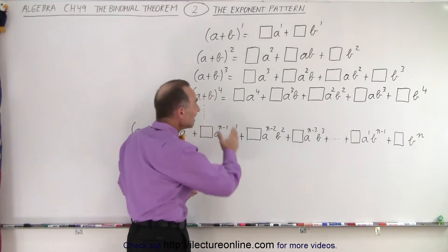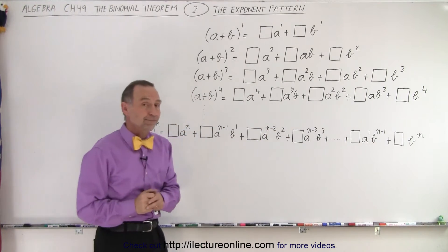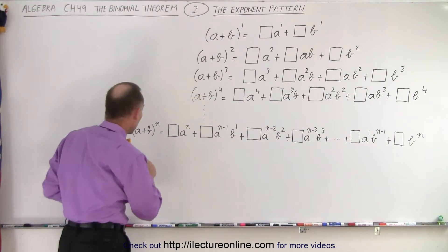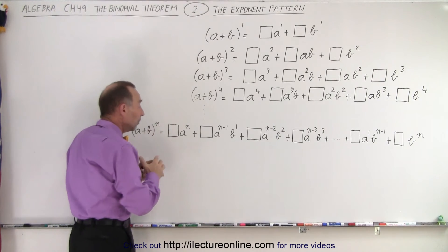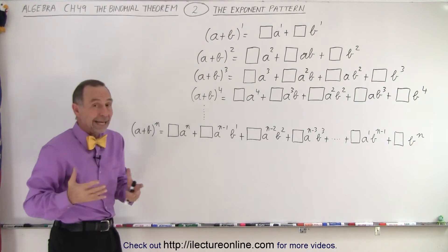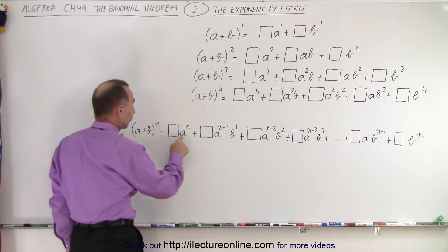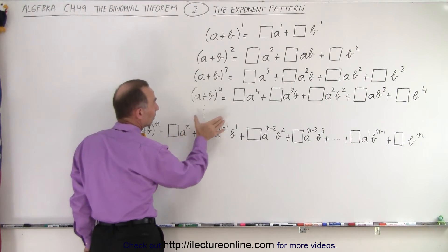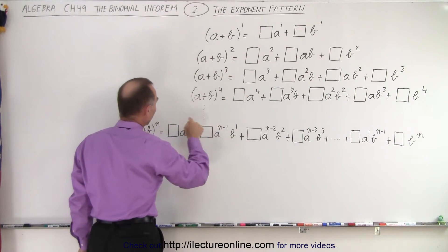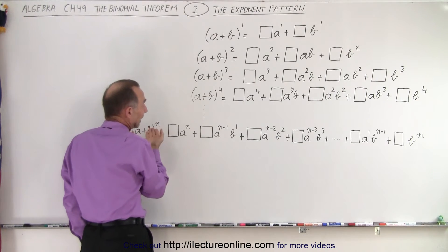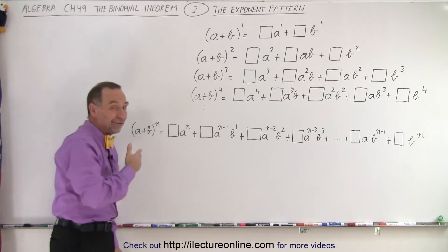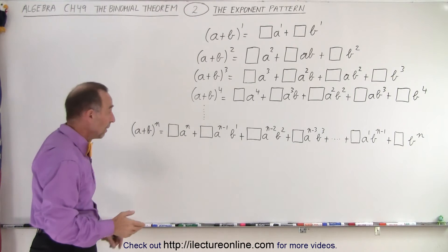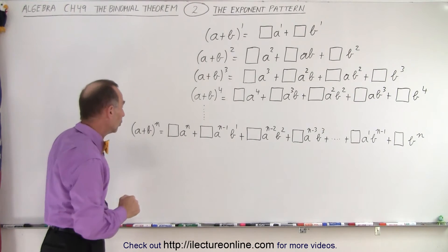That's the case in every binomial expansion. When we write (a + b) to the n power, no matter what n equals, the first term starts with a to the n and b to the zero, just as we've done before. Instead of a specific number, we simply write n. Of course n could be 5, 6, 7, 8, 9, or 1, 2 — it doesn't matter. The pattern will always hold.